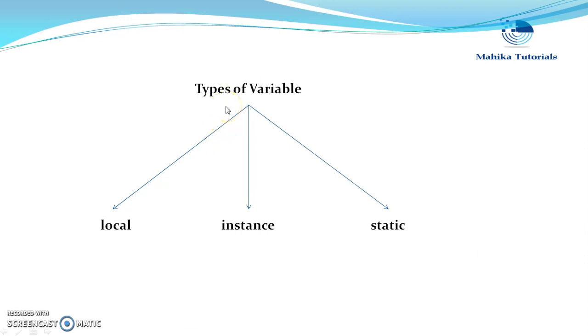A variable in Java can be one of these three types. It can be either a local variable, an instance variable, or a static variable.